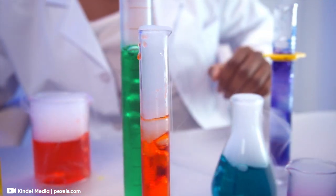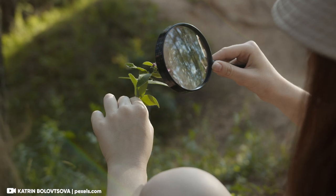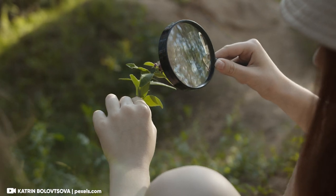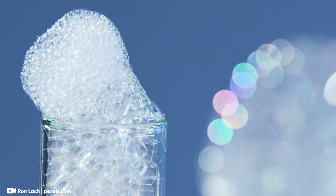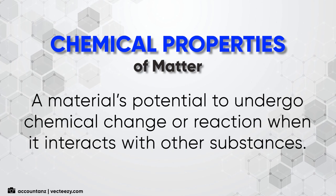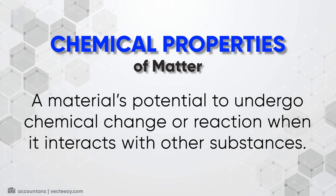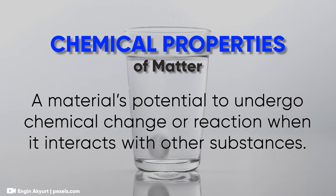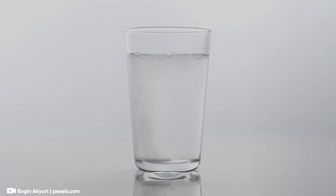While physical properties tell us what something looks or feels like, chemical properties are all about how a material behaves and reacts with other substances. Chemical properties describe a material's potential to undergo a chemical change or reaction, and these properties can only be observed when a material interacts with another substance.